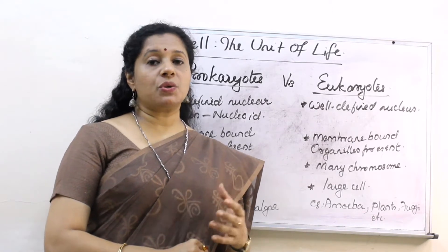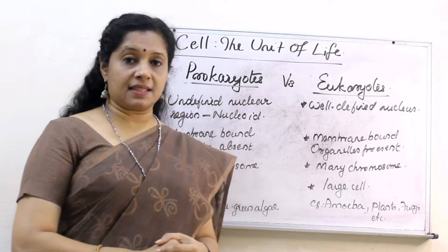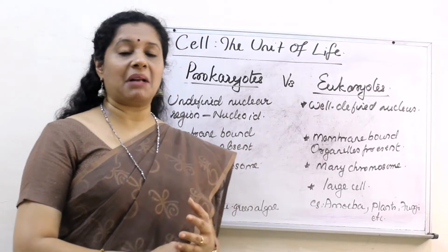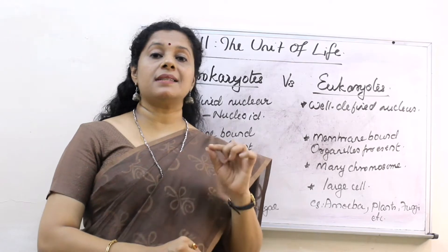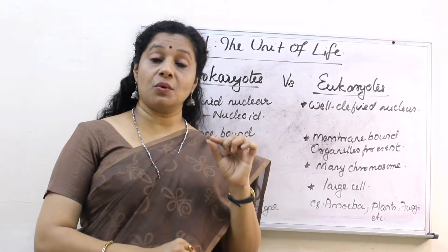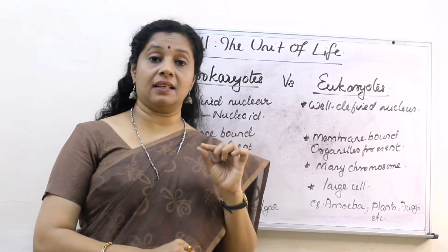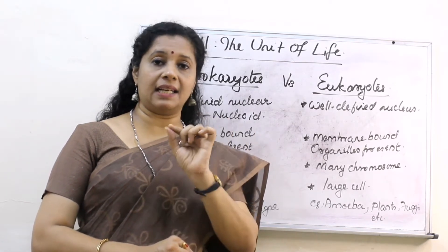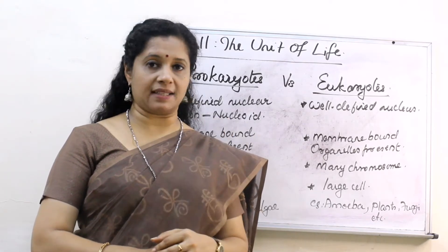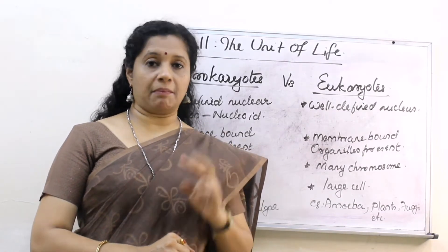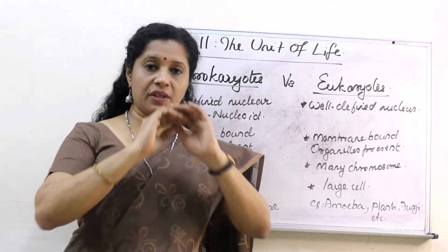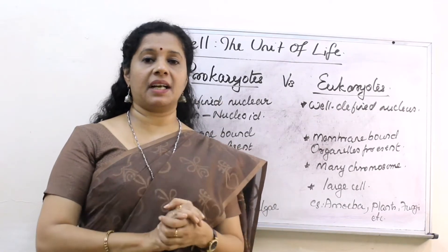Usually when we observe a cell, whether it is a plant cell or an animal cell, we see a nucleus in the center — or to the side in the case of a plant cell. The nucleus has two membranes to define it.